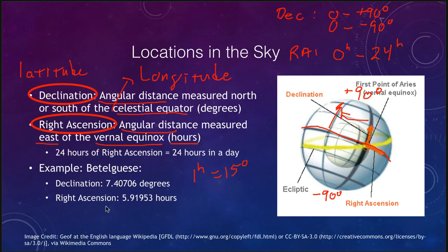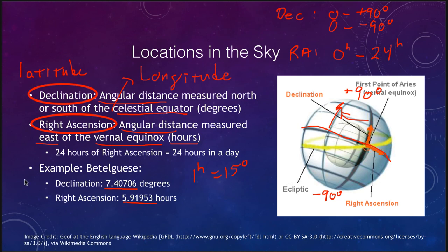For example, Betelgeuse is at a declination of 7.40706 degrees and a right ascension of 5.91953 hours. That means it's a little bit north of the equator — a positive declination — and about six hours east of the vernal equinox. So if the vernal equinox is just setting on the western horizon, Betelgeuse will set approximately 5.91953 hours later. We can use these coordinates to determine the exact location of Betelgeuse in the sky and point a telescope accurately to it, just as latitude and longitude told us exactly where the Washington Monument is.